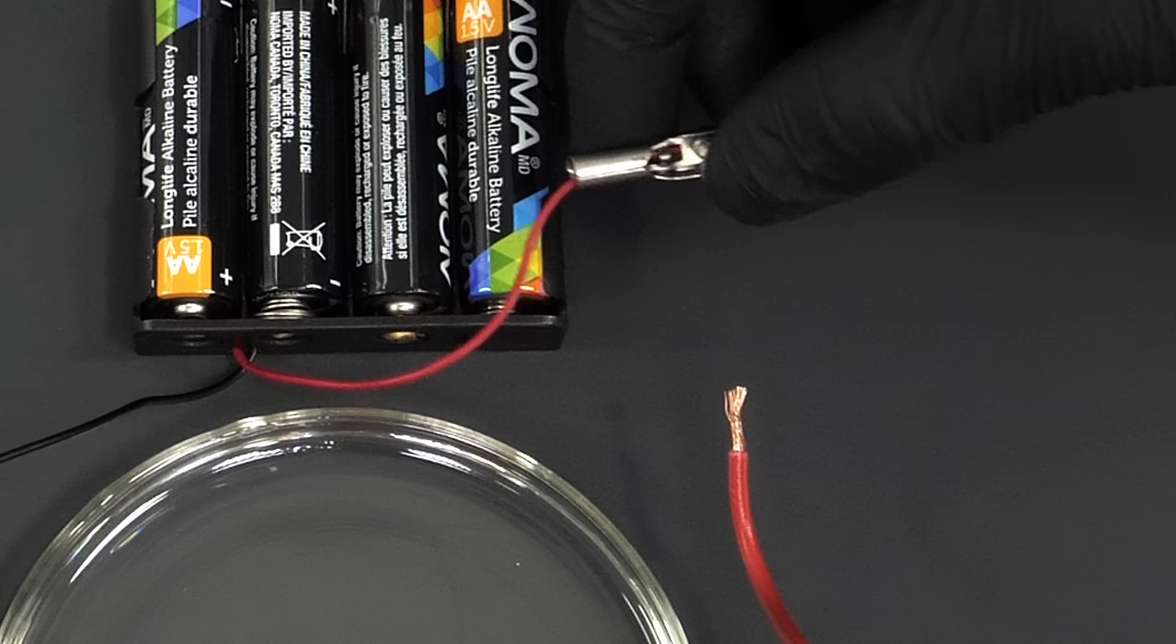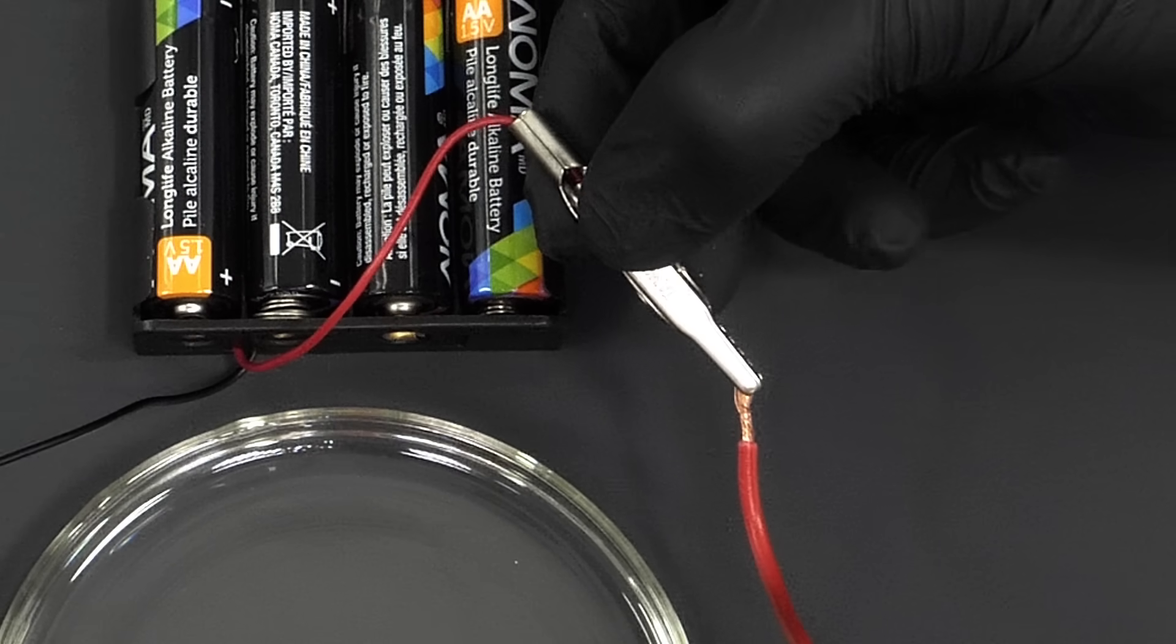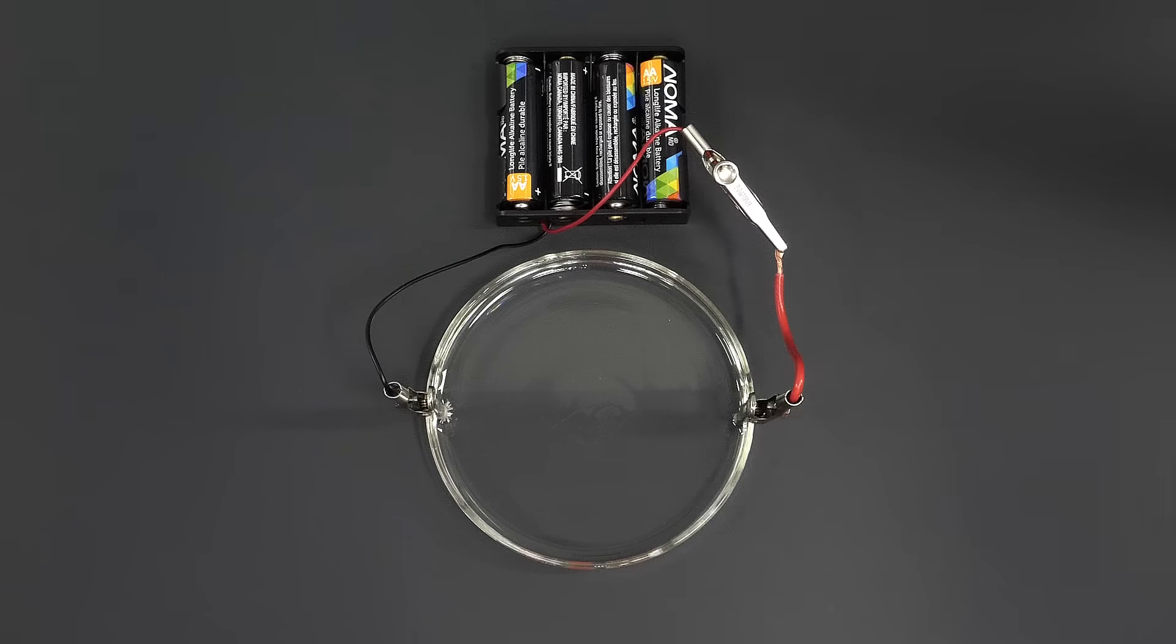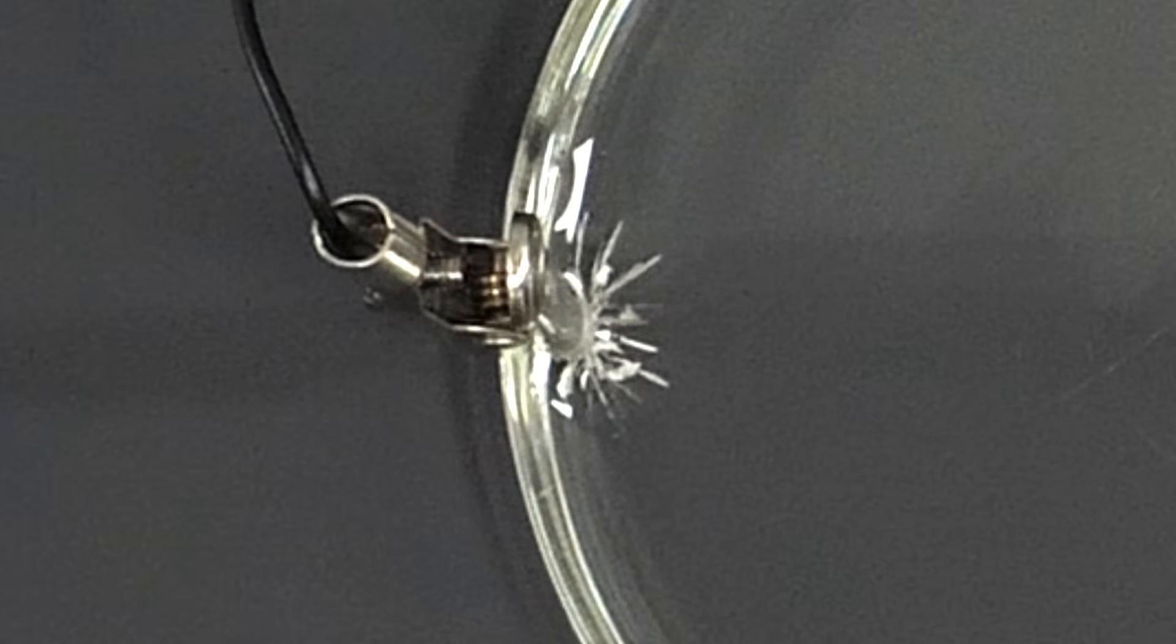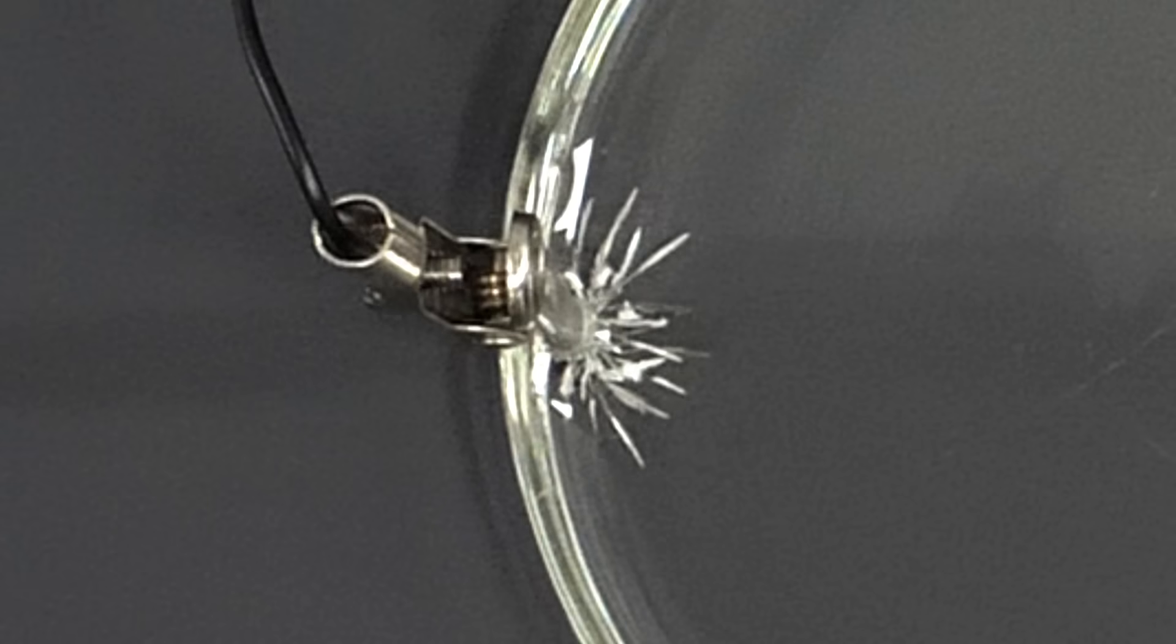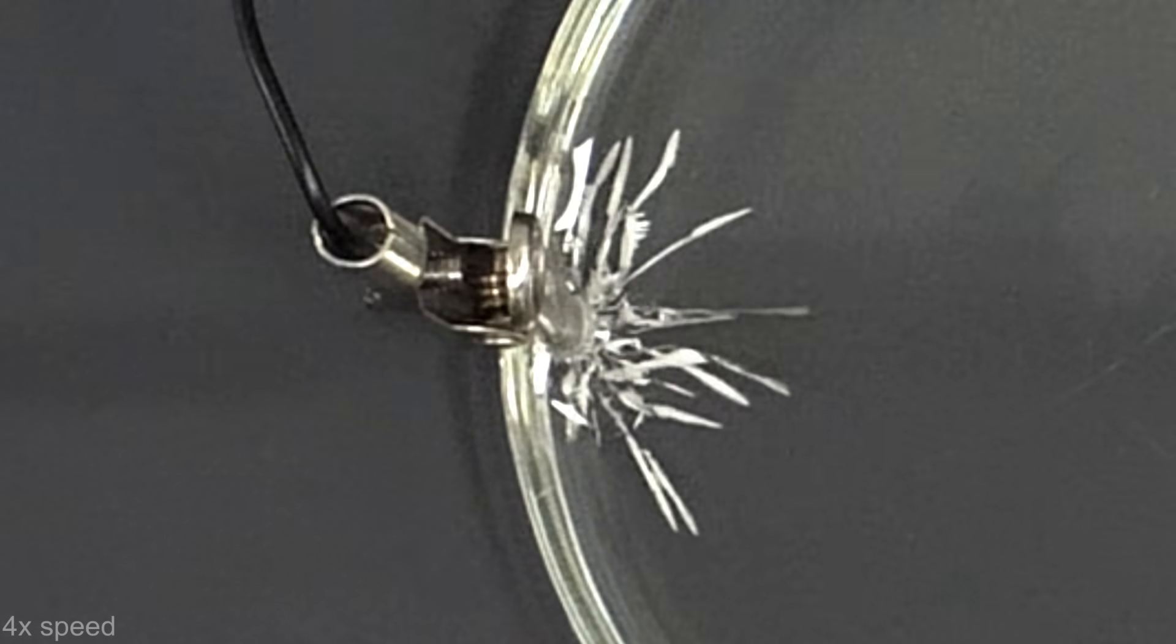Now to grow the crystals, all I have to do is connect the red wire. Almost immediately, something started growing. This was all tin, and it was forming as some really nice metal crystals.